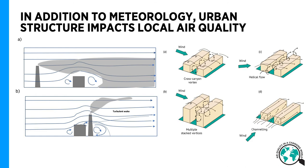So far we have learned how the emissions themselves impact on the local concentrations, but also how meteorological conditions can modify the concentrations in urban areas. One important variable determining the high spatial and temporal variability in urban areas is the effect of urban structure or urban topography on the flow and air pollutant concentrations.